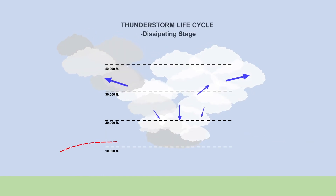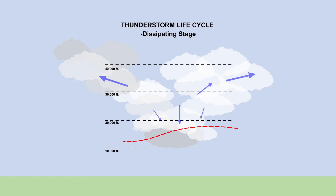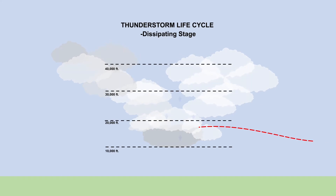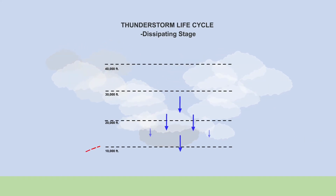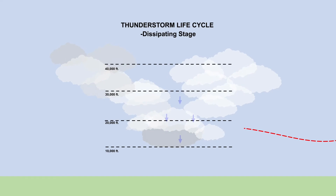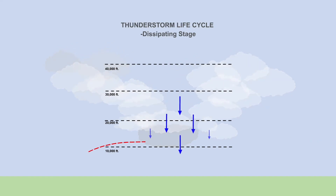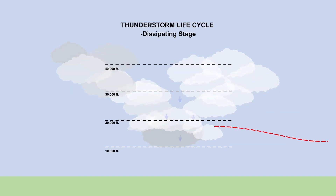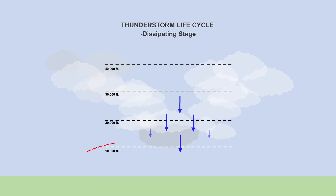The third and final stage of the thunderstorm life cycle is the dissipating stage, where the thunderstorm starts to break apart. However, there are still many hazards involved. There is a lot of energy built up in the thunderstorm that has to be dispersed, so this stage can still produce lightning. It is also characterized by very strong downdrafts, which in a small aircraft can be extremely dangerous.